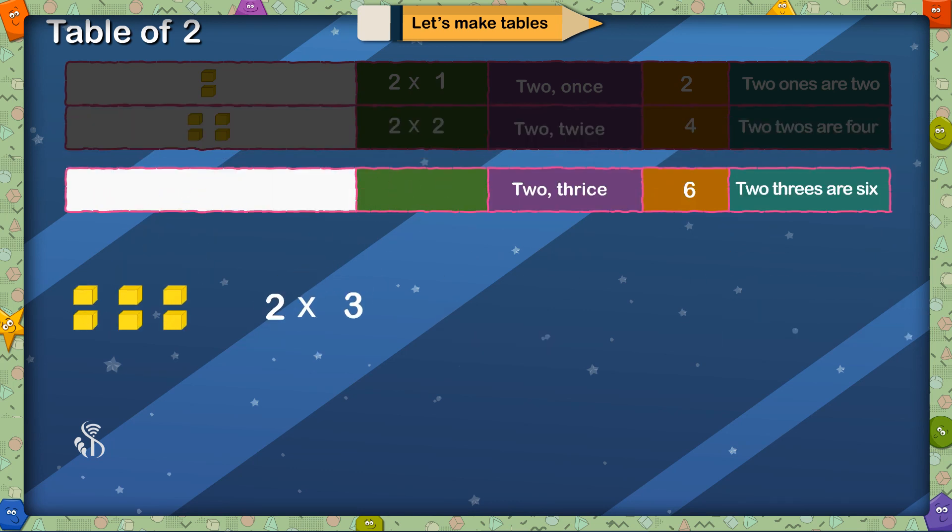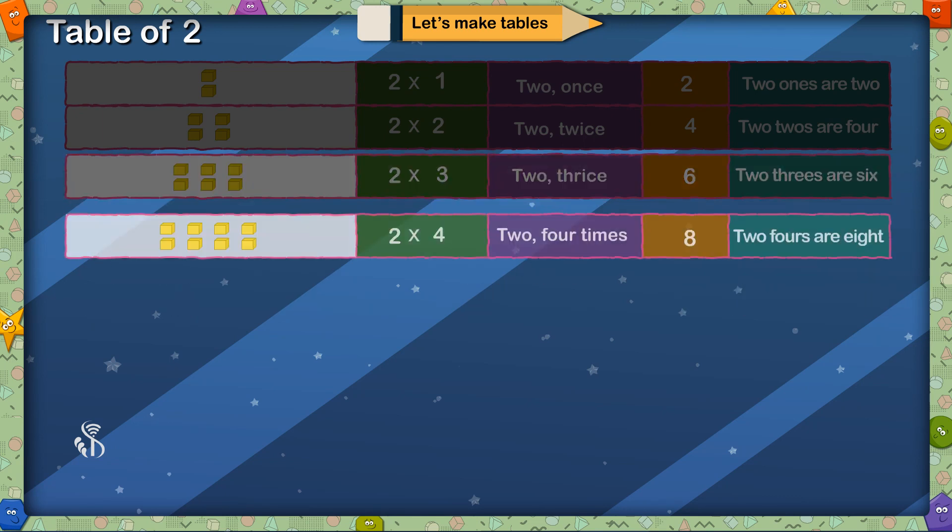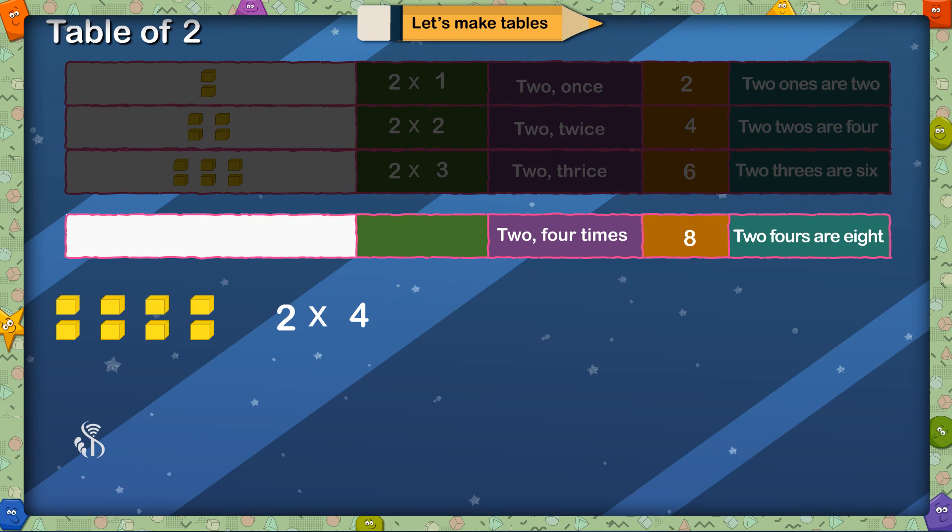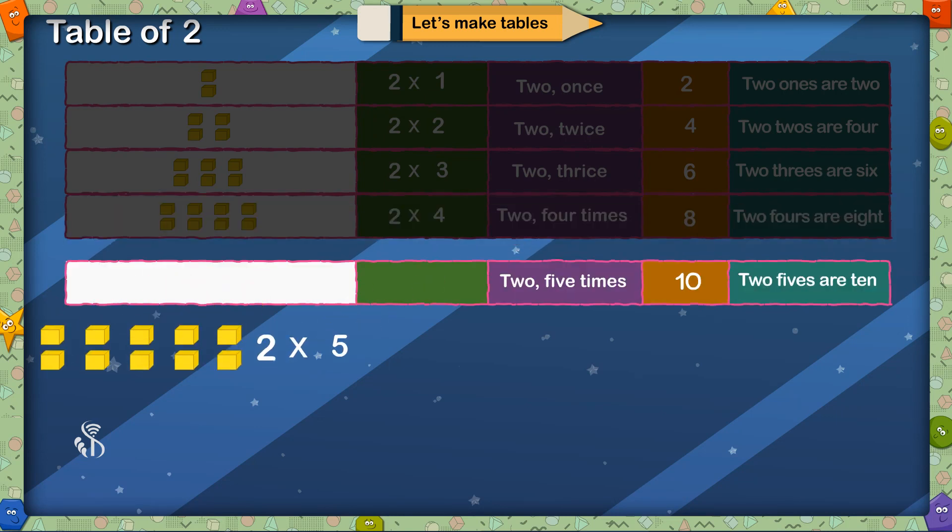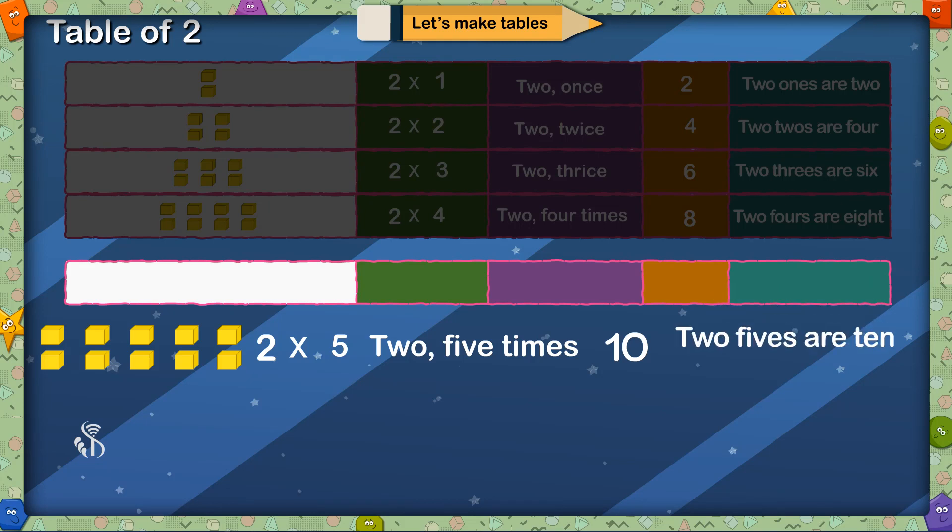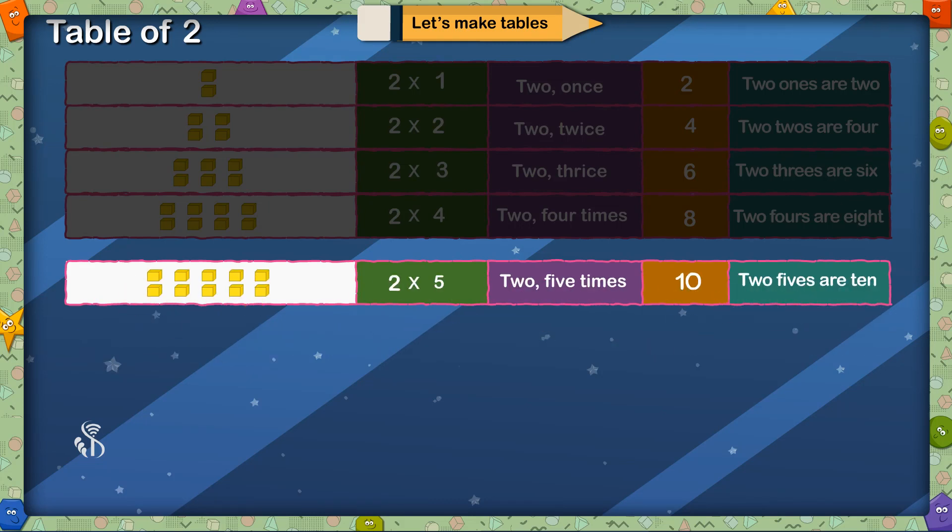2 multiplied by 3, 2 3 times is 6, 2 3s are 6. 2 multiplied by 4, 2 4 times is 8, 2 4s are 8. 2 multiplied by 5, 2 5 times is 10, 2 5s are 10.